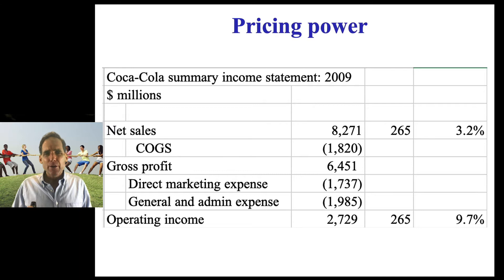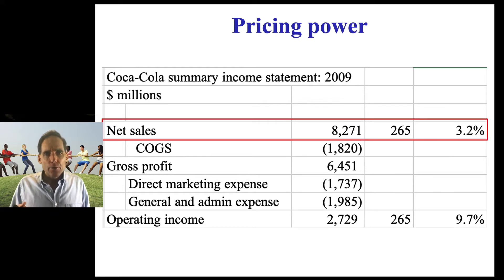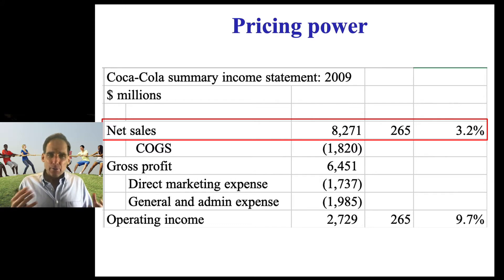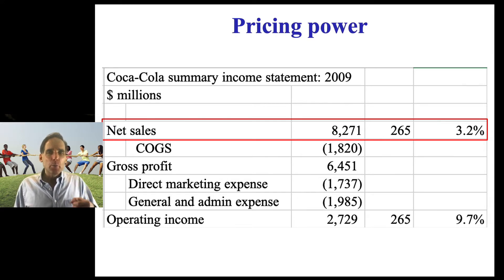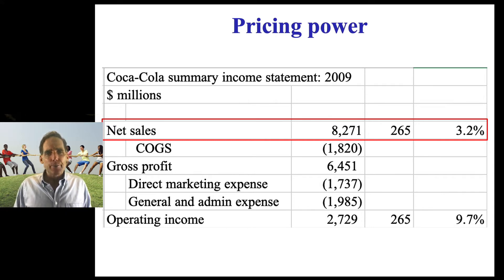Now let's try a quick and dirty back-of-the-envelope analysis to quantify how much that bargaining power, as manifested through pricing power, is worth to Coca-Cola. So in this analysis, the difference between the price increase at retail — a little bit under 1% — and the price increase for concentrate — almost 4% — between 2008 and 2009 was 3.2%. We can think of this as the benefit to Coca-Cola of its bargaining power. It's equal to 3.2% times its total revenues — making some simplifying assumptions, but this is for illustrative purposes. So 3.2% of their total revenues turns out to be $265 million in 2009.